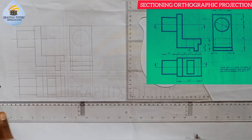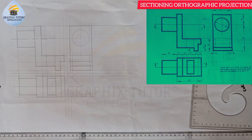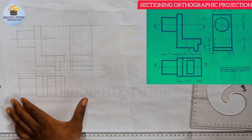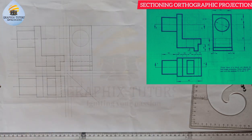We have successfully reproduced the figure that you can see on the right-hand side of the screen. This is not what we are asked to do, but we are going to work on this. The question says we should draw the views of the block and also show the sections XX and YY.